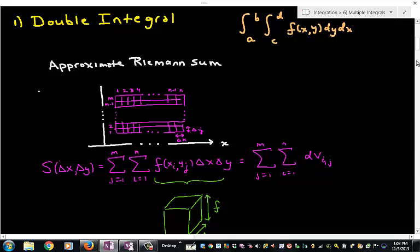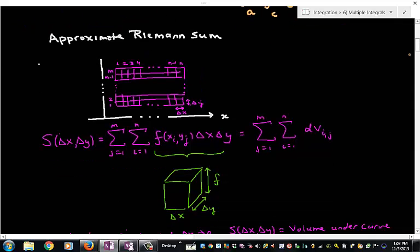We can get some sort of Riemann sum as a function of the subinterval widths. If we look at the terms in this summation, they're basically little elements of volume. This is our length, our width, and our function's our height.